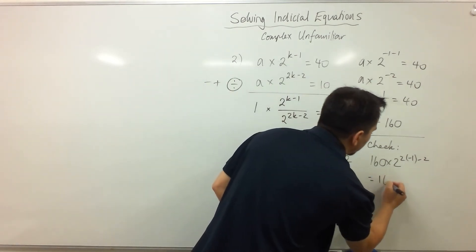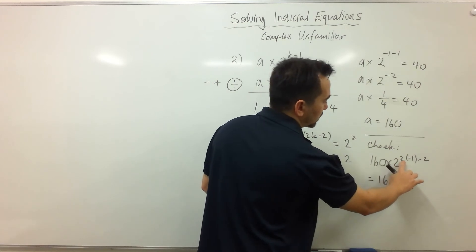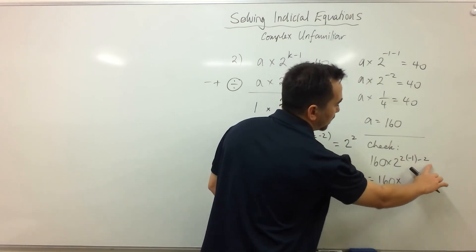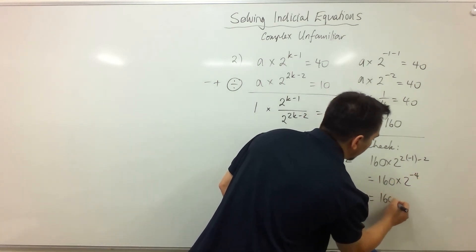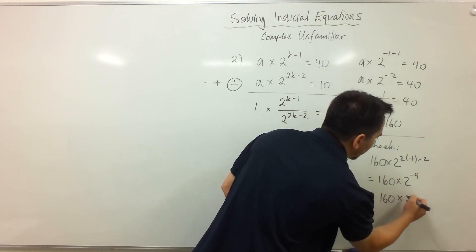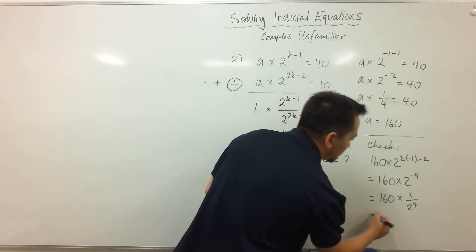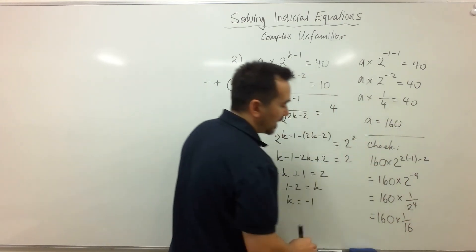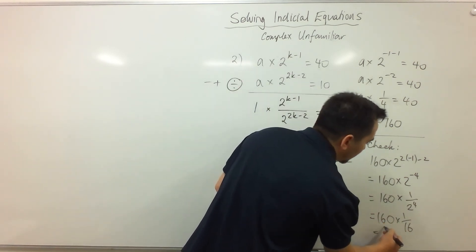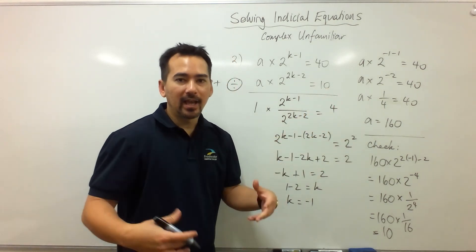So we have 160 times by 2 to the power, 2 times negative 1 is negative 2, negative 2 take away another 2 is negative 4, and we have 160 times by 1 on 2 to the power of 4, which is the same as 1 on 16, and obviously the 16s will cancel, leaving our answer to be 10, which is the right-hand side, and we know we did it right.